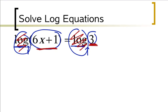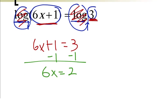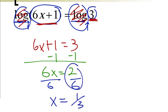We can drop logs here, and just rewrite this as 6x plus 1 equals 3. So this log problem actually got really simple in a hurry. All I have to do is subtract 1 from both sides, and I get 6x equals 2, and then just divide by 6, and I get x equals 1 third.